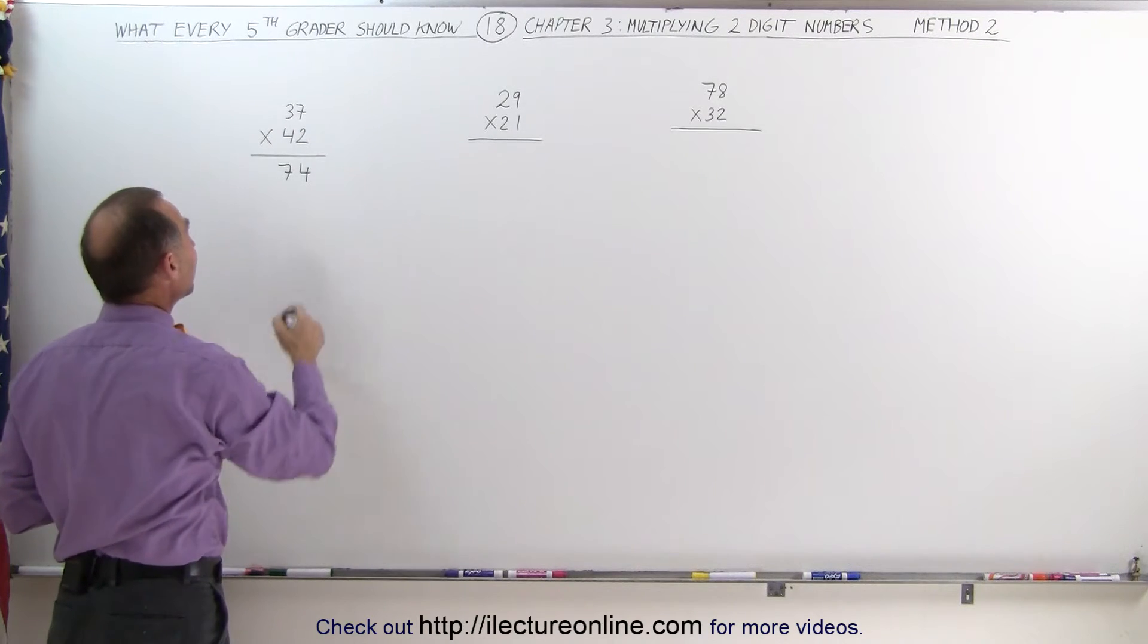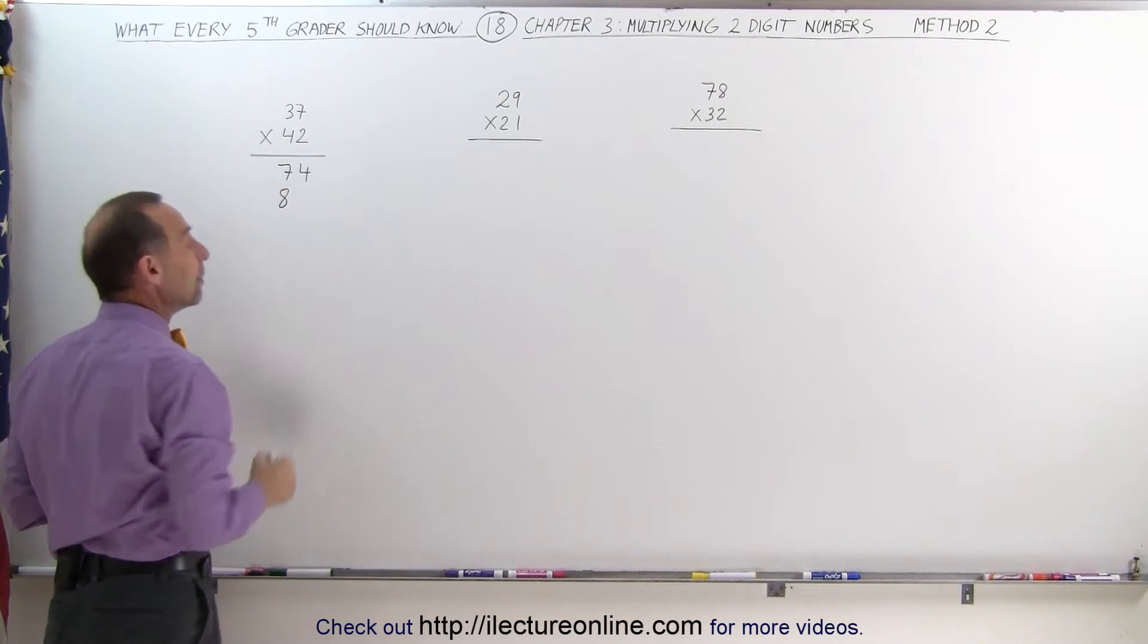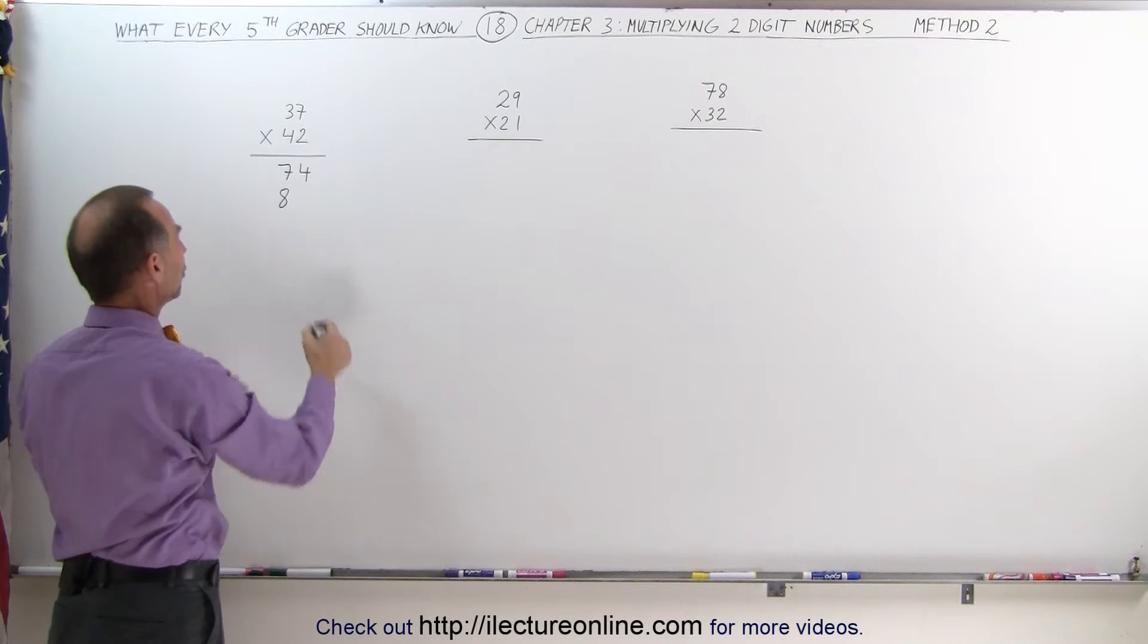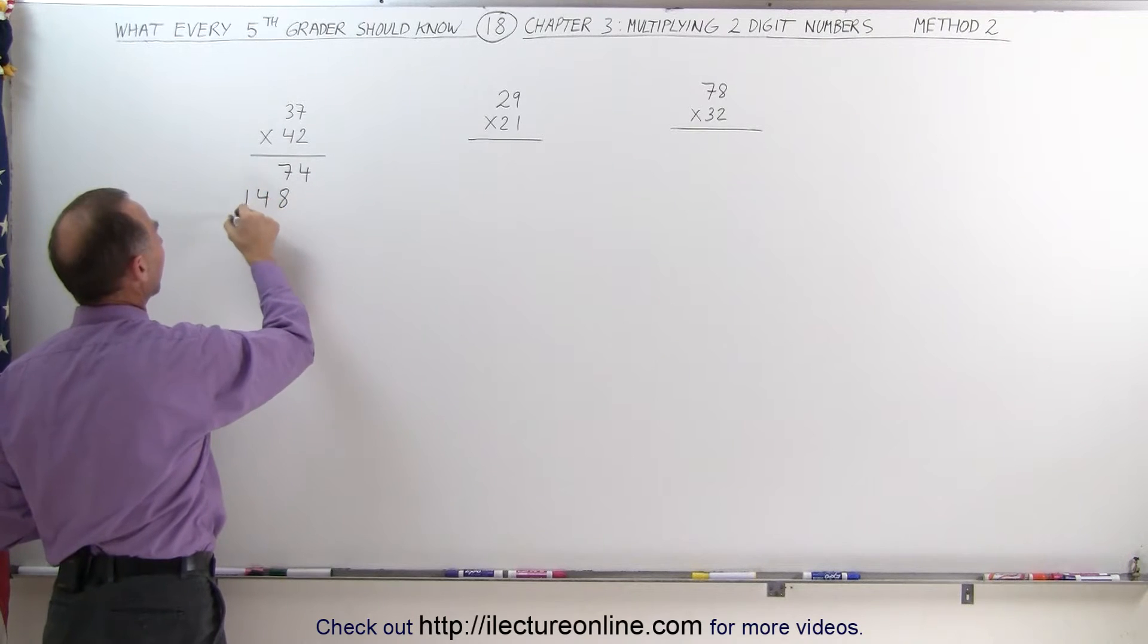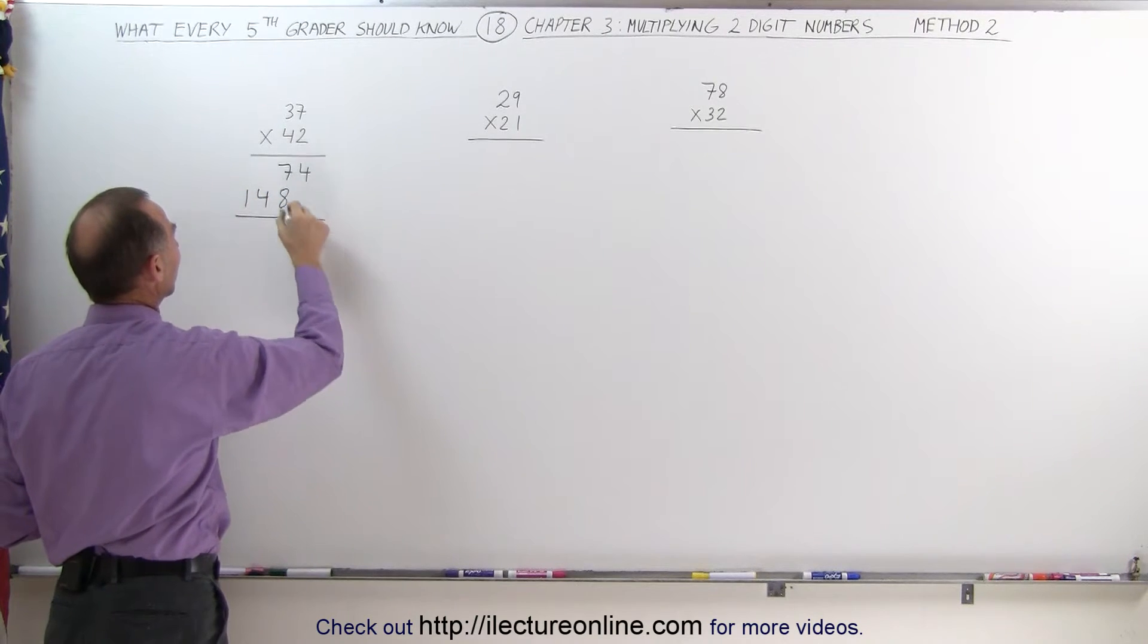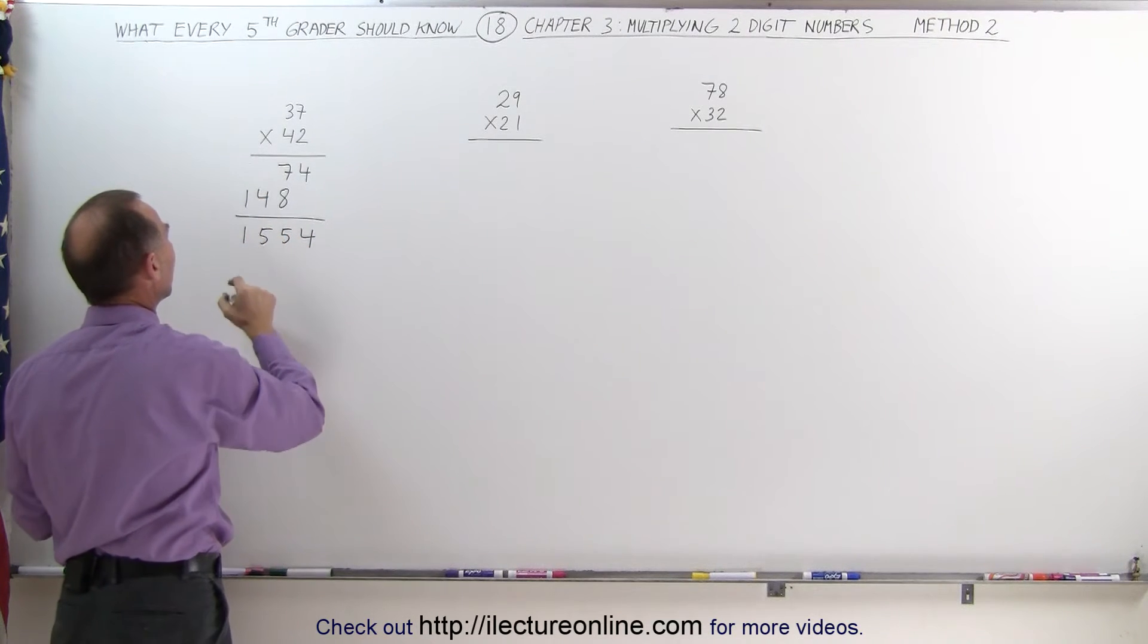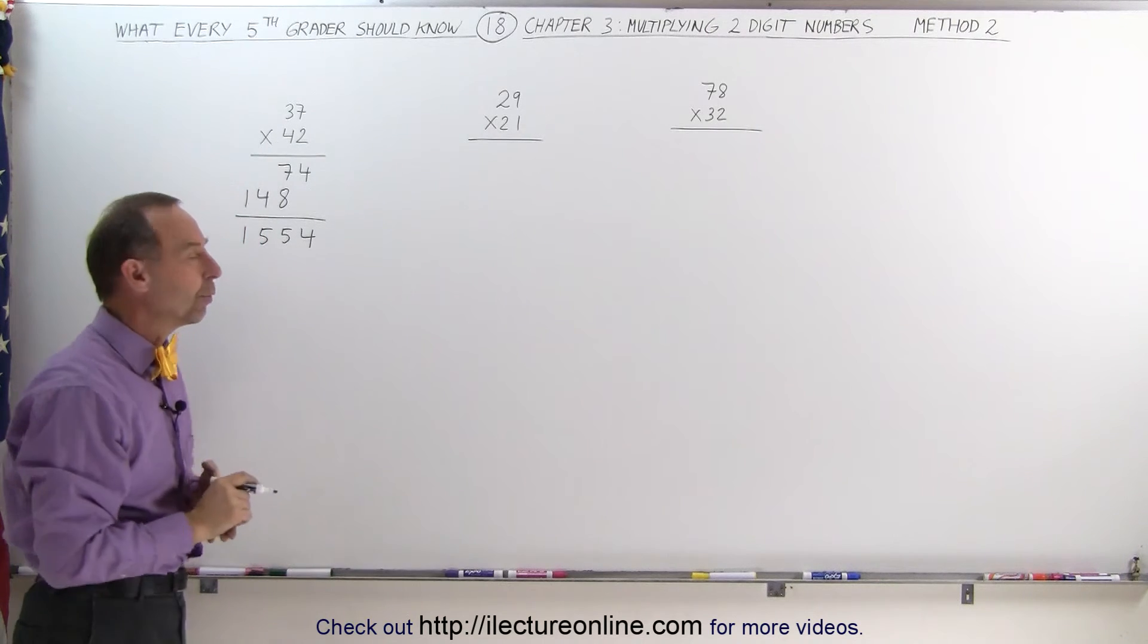4 times 7 is 28. That gives me an 8, I remember 2. That's why I put two fingers out. 4 times 3 is 12 plus 2 is 14. I can add all that together. I get 4, 7 plus 8 is 15, write down 5, I remember 1. 4 plus 1 is 5, and 1. So the total is 1,554.